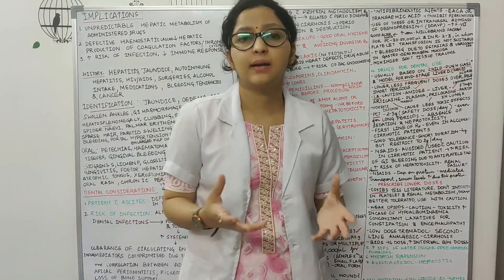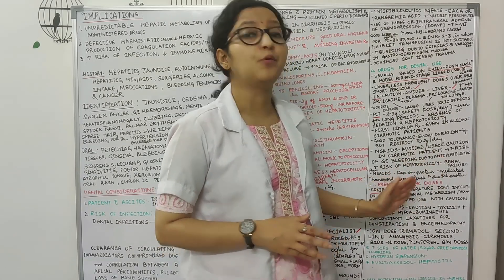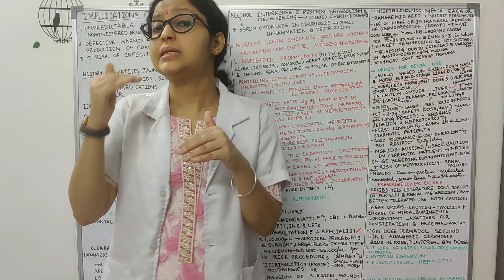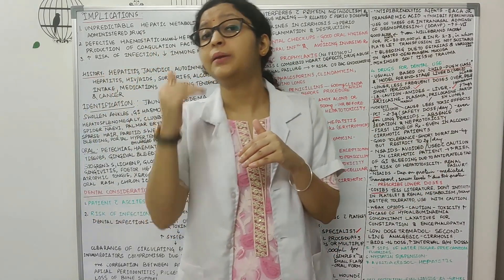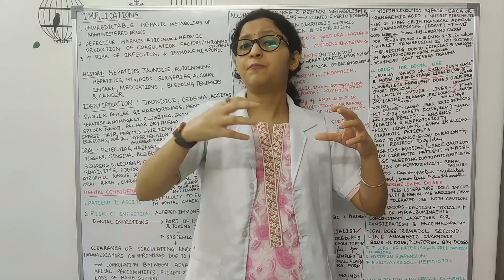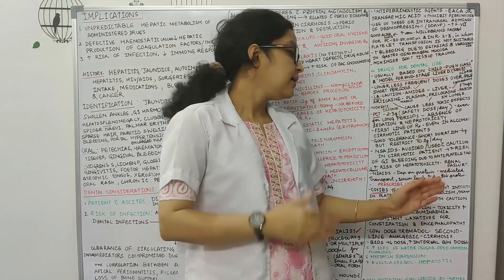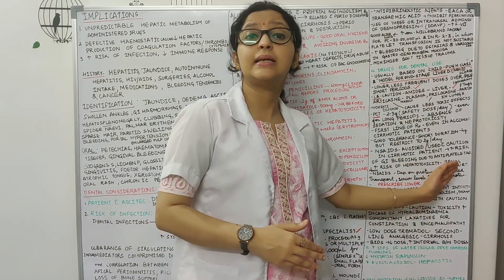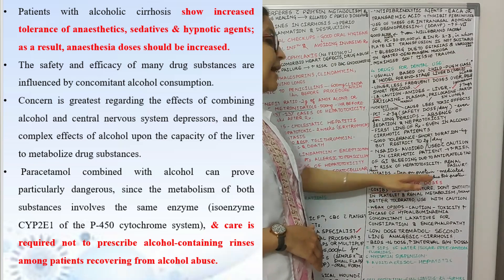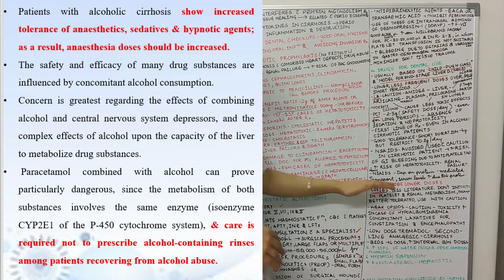Most NSAIDs depend on protein-mediated transport, but because the production of proteins is decreased in liver patients, NSAIDs are not getting enough protein for transport. Because of that, their levels increase in the blood, and therefore we need to prescribe lower doses of NSAIDs.